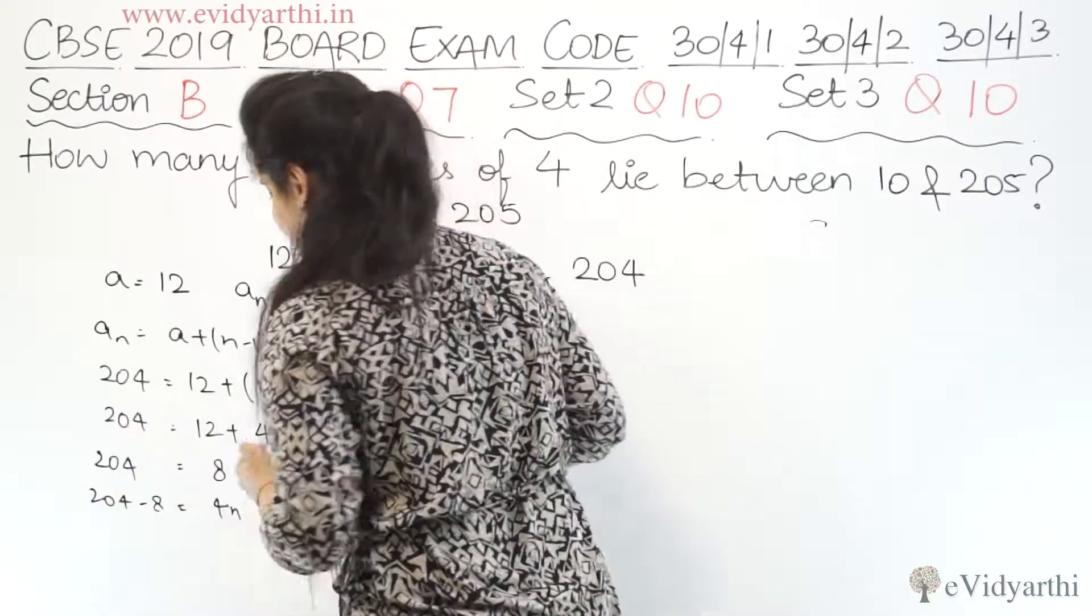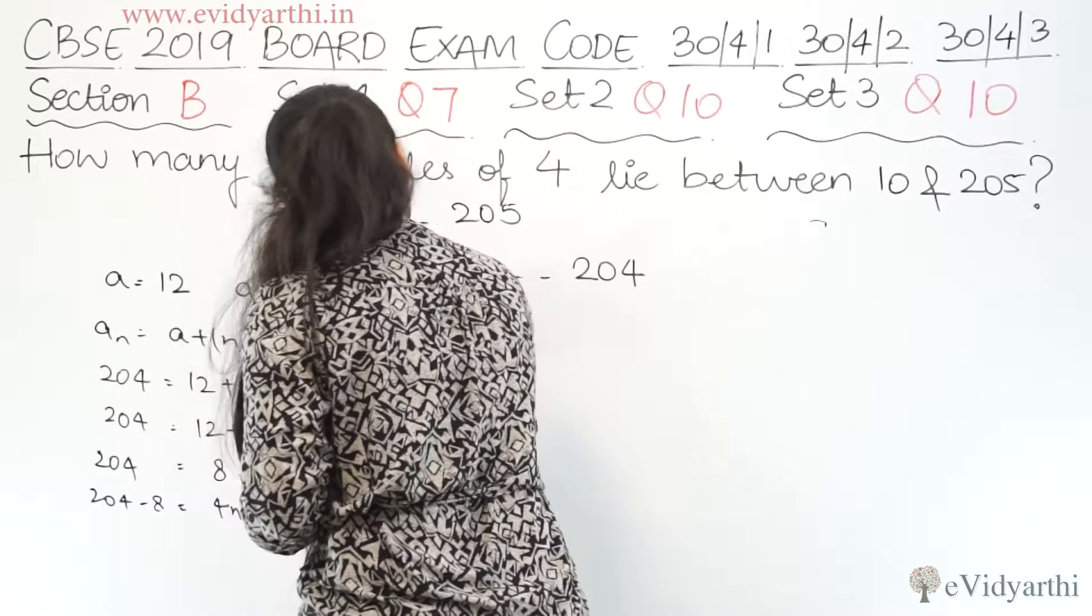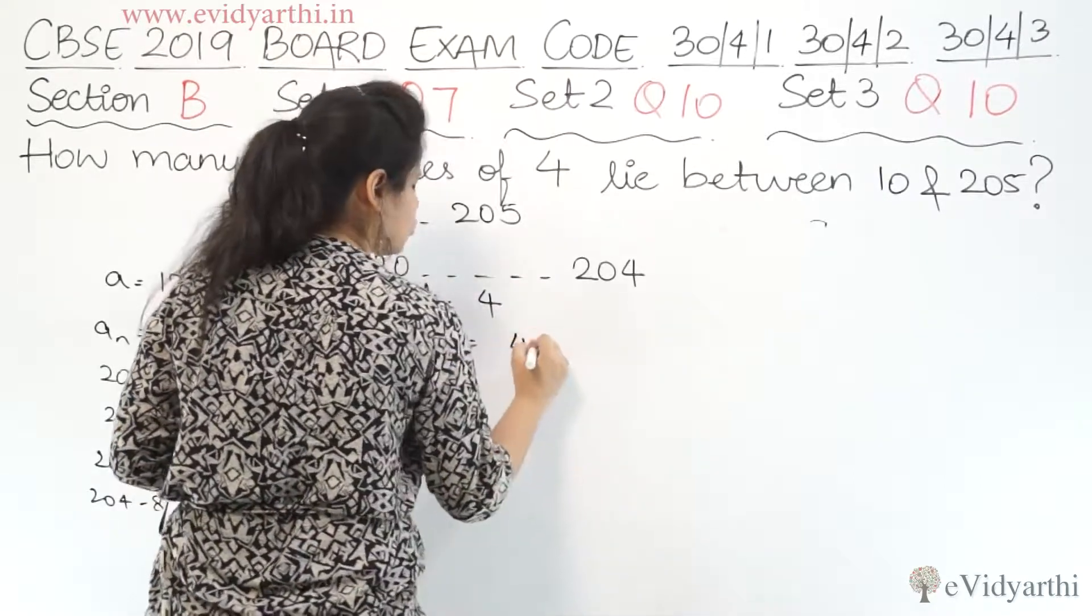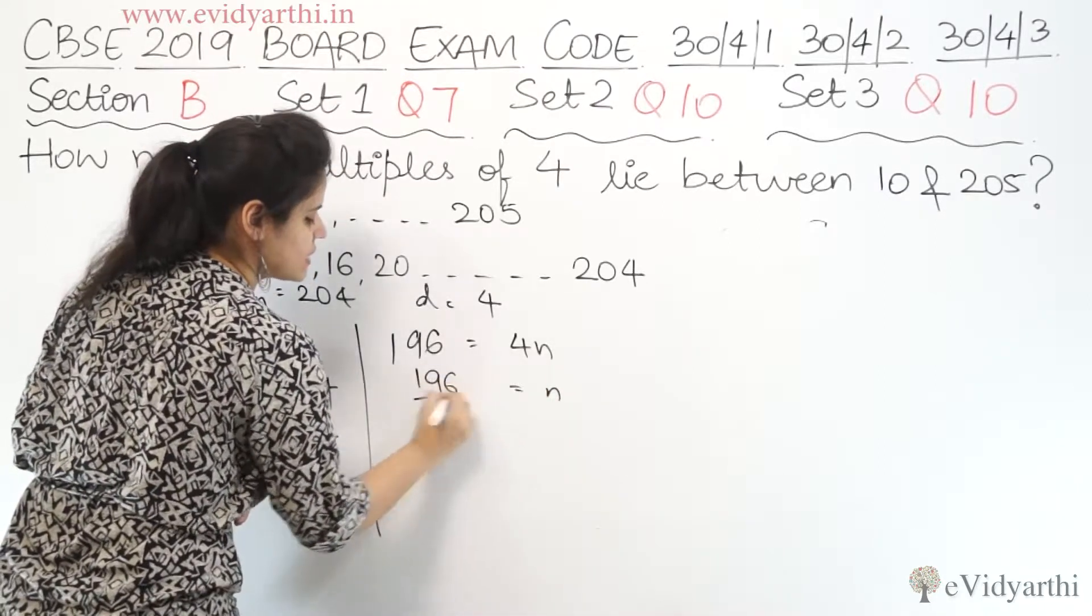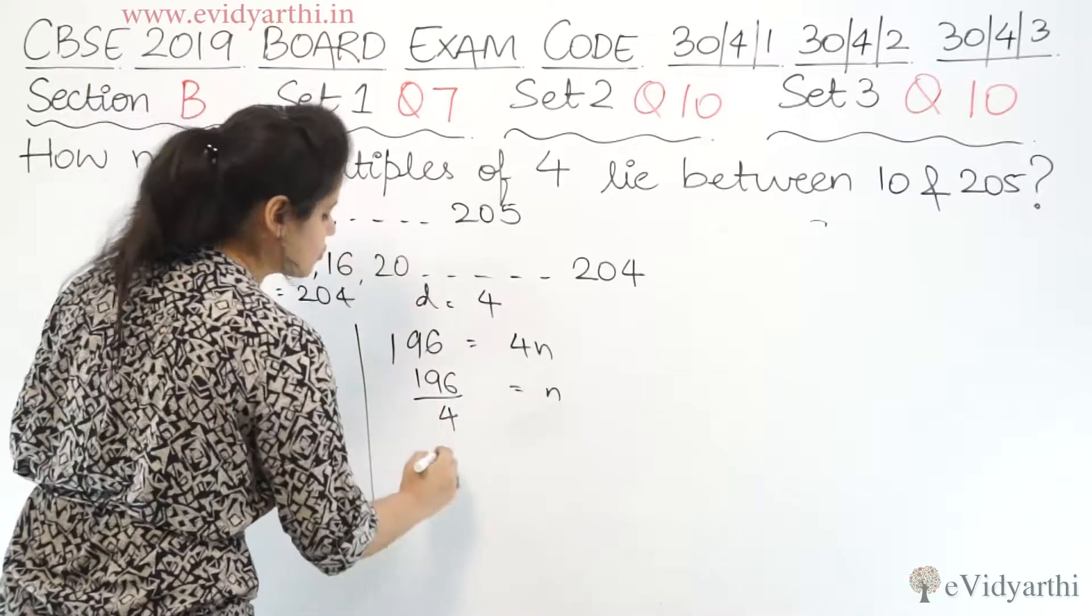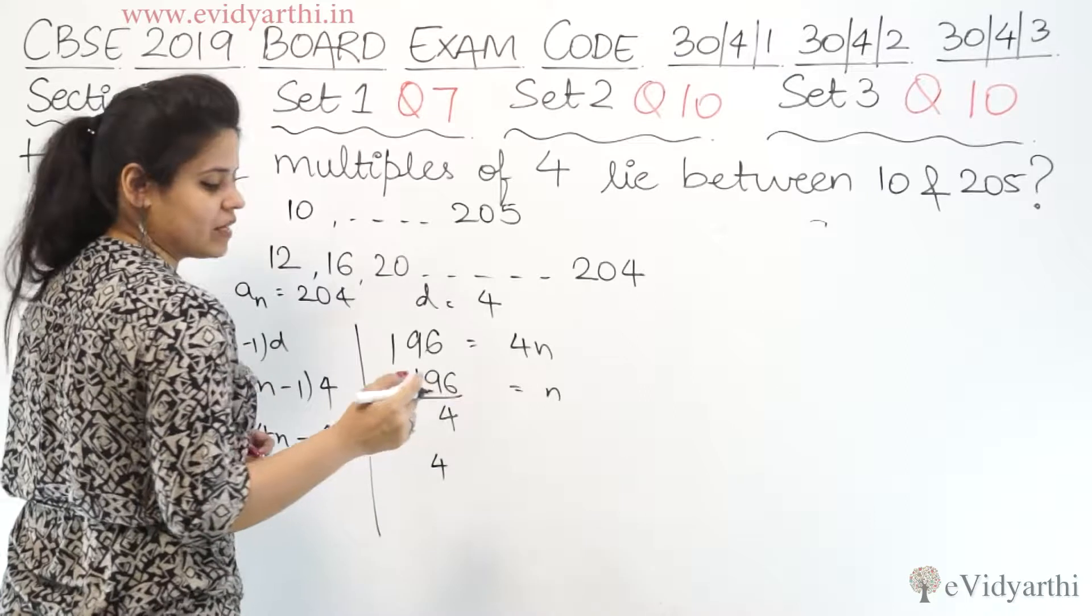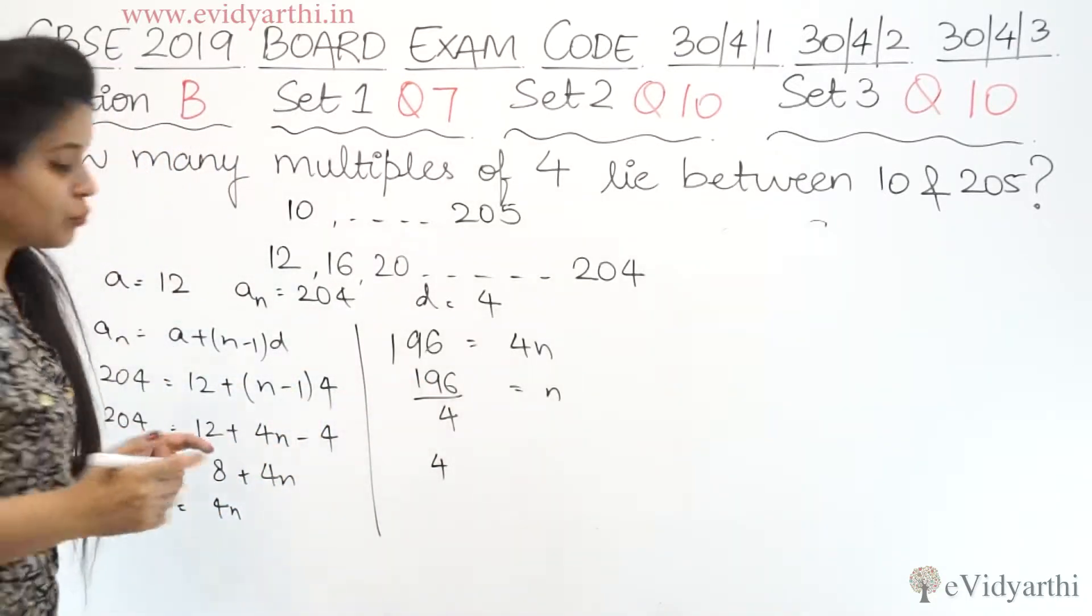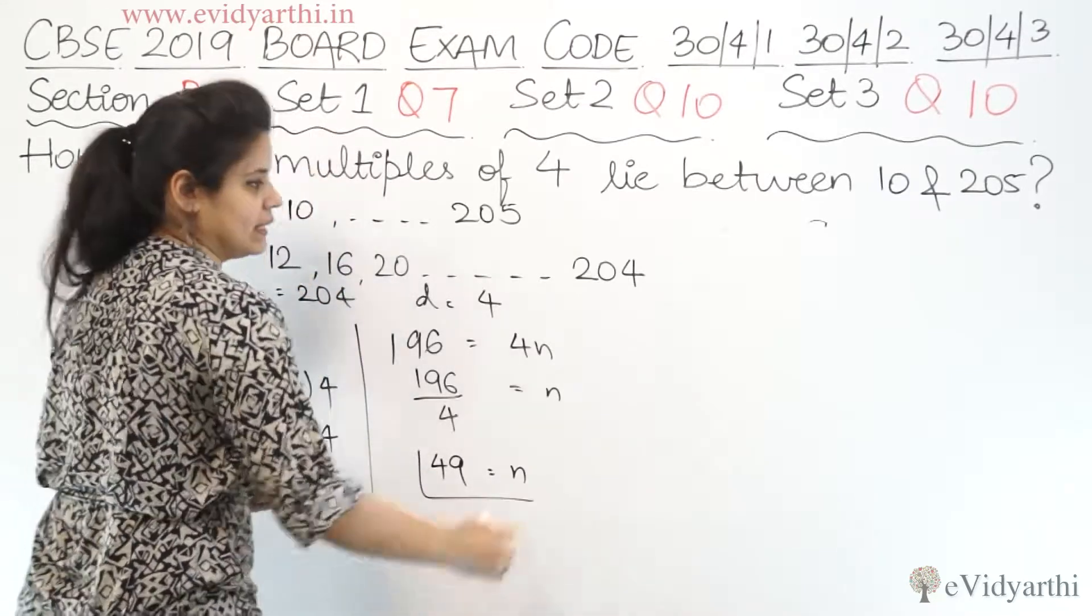Now 204 minus 8. 8, 9, 10, 11, 12, 13, 14 - here we get 6, here we have 9 and 1. 196 equals 4n. We need to find n. So that will be 196 divided by 4. 4 fours is 16. Again here we have 36. So 4 into 9 is 36. So therefore n is 49.